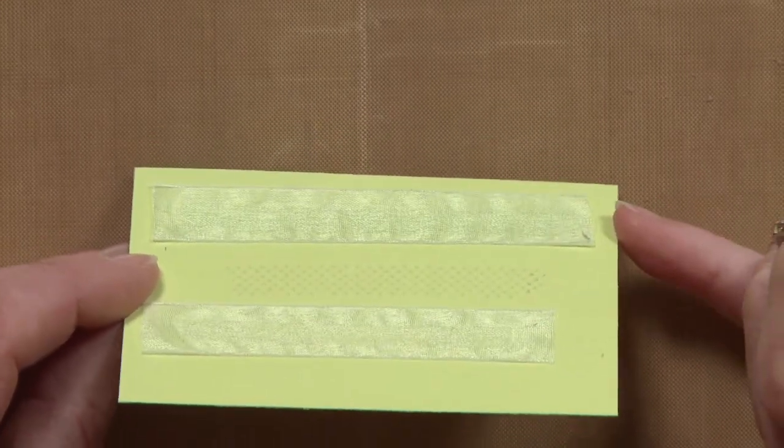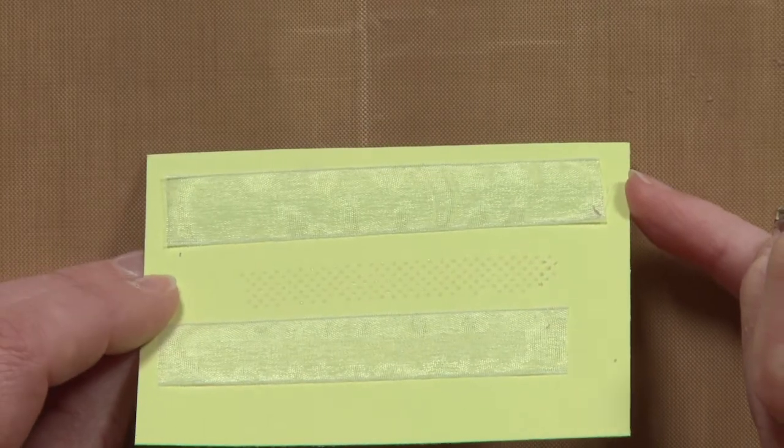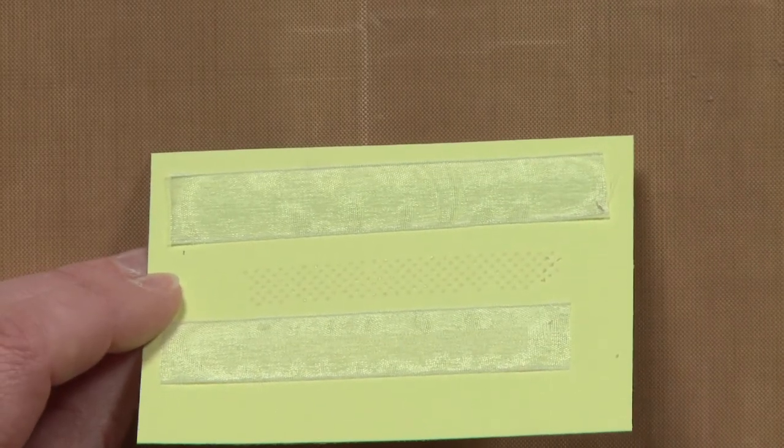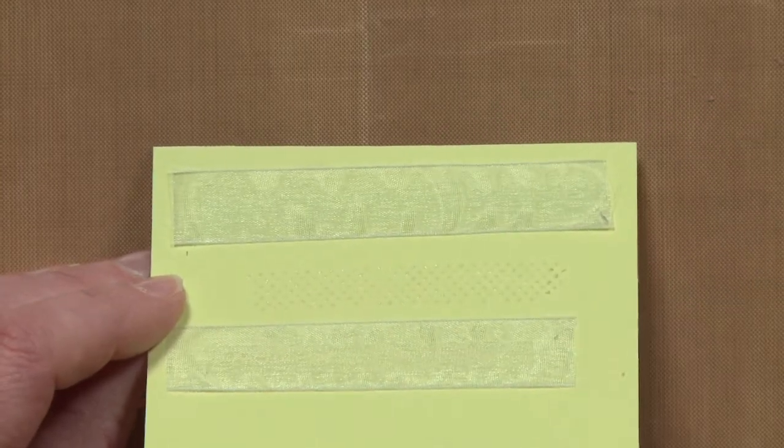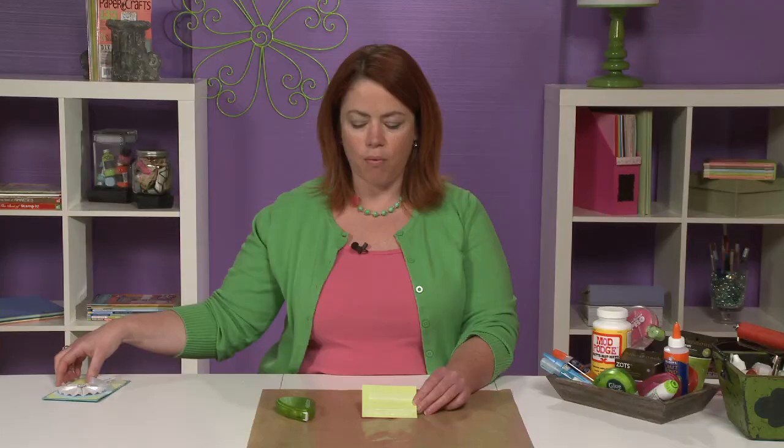But on this one down here if you look closely we've used this dotted tape runner and you really can't see it. So this is a great way to show that the sheer ribbon can be adhered in that way.